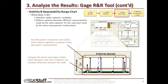We also want to compare the layout and shape of data points between each of these trials to observe any variation differences between the trials. Looking at each operator — the first, second, and third — the shape of the data points looks relatively the same.